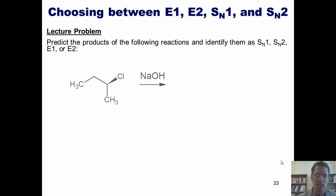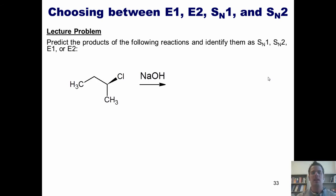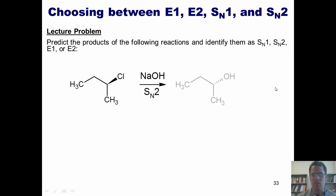Let's do the same for this example. Is my leaving group — this chlorine — stuck to a primary, secondary, tertiary, or stabilized carbon? It's secondary, which means this could potentially be E1, E2, SN1, or SN2. Is my nucleophile/base strong or weak? There is a localized negative charge on this oxygen, so it is strong, meaning it will proceed through E2 or SN2. Is my nucleophile/base a nucleophile or a base? It's smaller than ethanol on paper, so it's a nucleophile — this will favor an SN2 mechanism. Hydroxide comes in via backside attack, kicks off the chloride in a single step, and gives this product with inversion of stereochemistry.